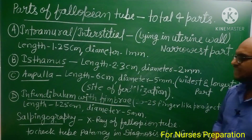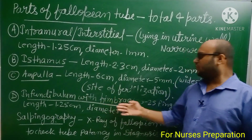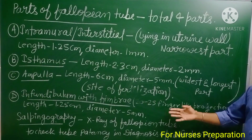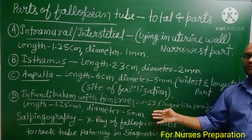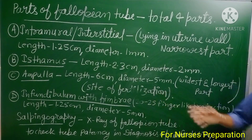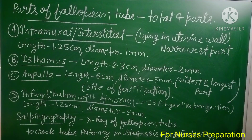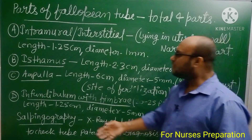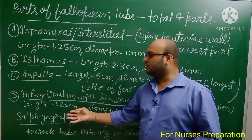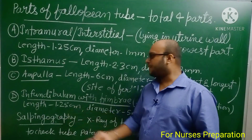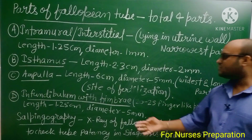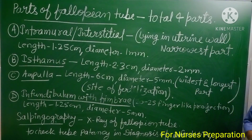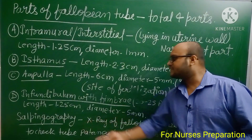The fourth and last part of the fallopian tube is the infundibulum, which has fimbriae — finger-like projections. There are 20 to 25 such projections. The length of the infundibulum is approximately 1.25 centimeters and its diameter is 5 mm.